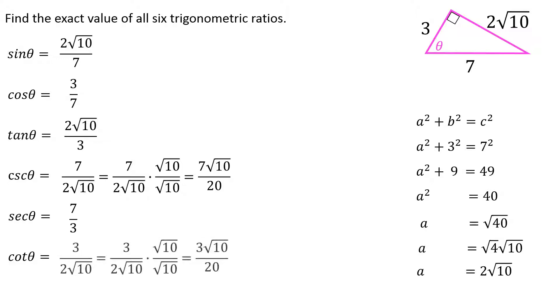Cotangent is the reciprocal of tangent, and again I cannot leave a radical denominator. I rewrite that as 3√10 over 20. So using some of those old algebra 1 skills to rewrite without the radical denominator.